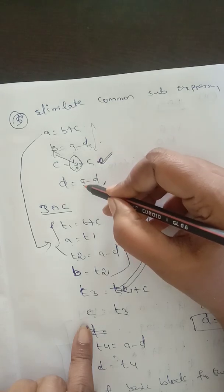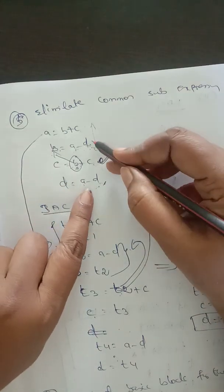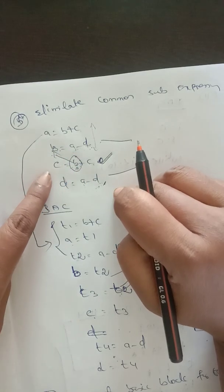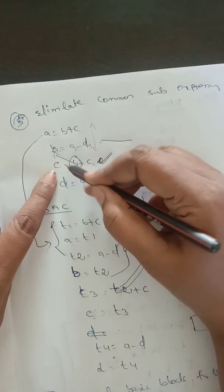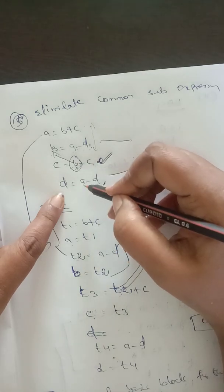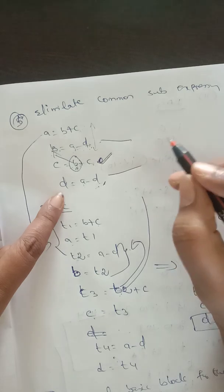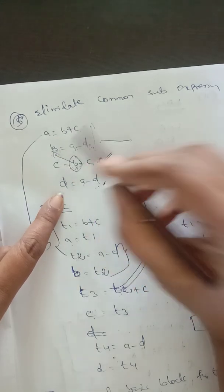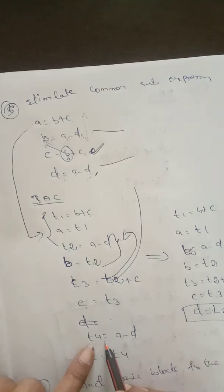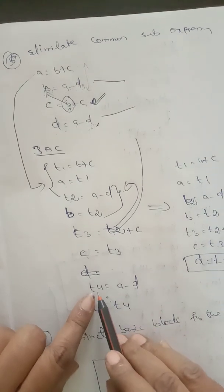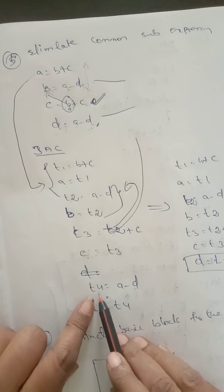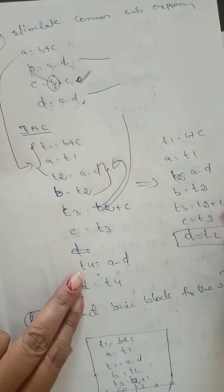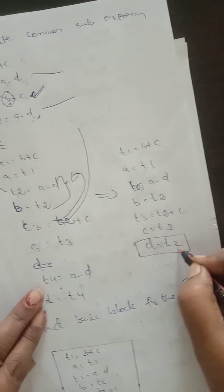We check whether the values of a and d are recomputed between line 2 and line 4. In between, c equal to something — a is not recomputed. The next line d equal to a minus d — again, a and d are not recomputed. So instead of writing t4 equal to a minus d again, we can directly write d equal to t2.